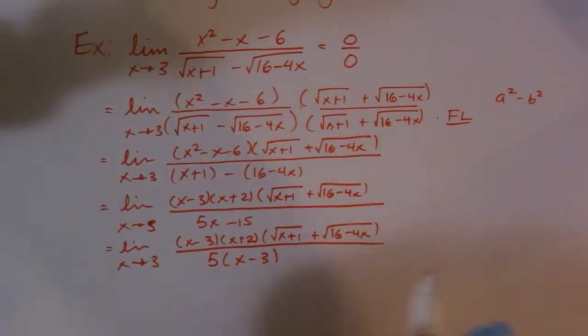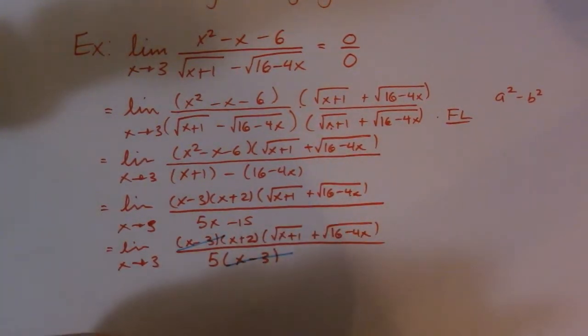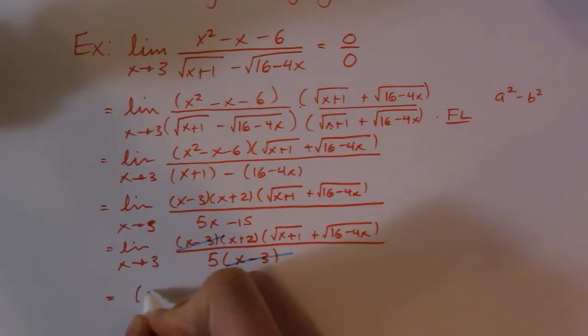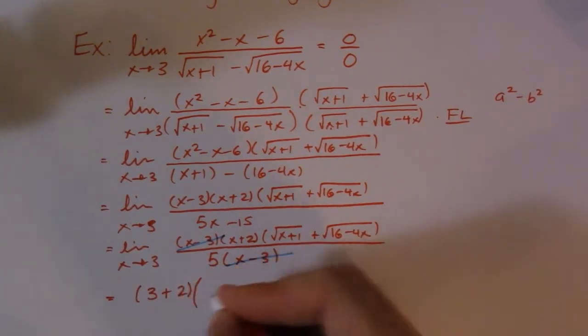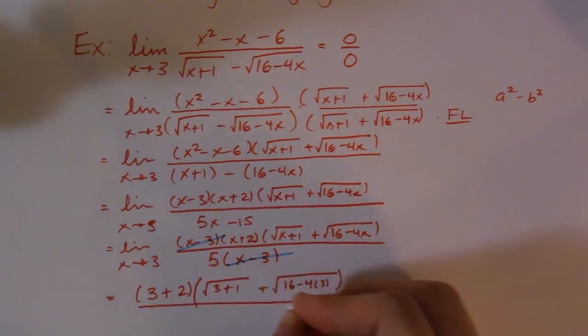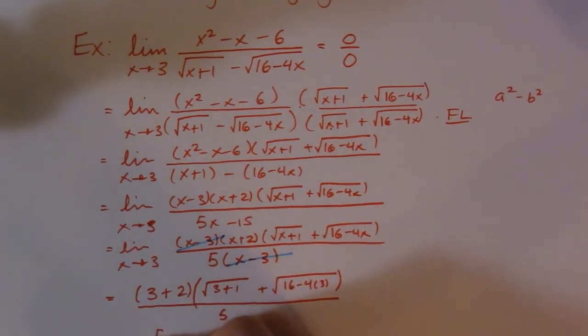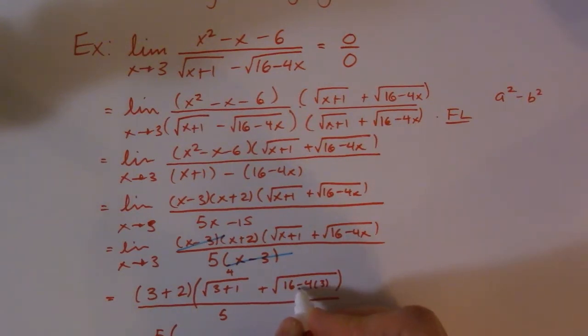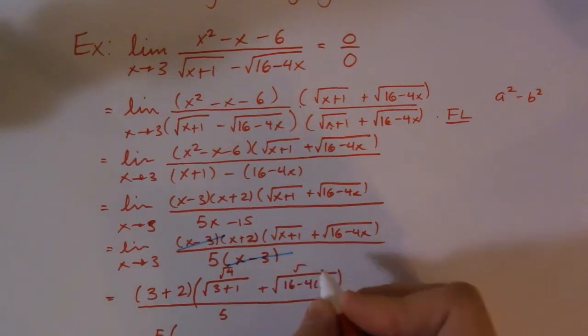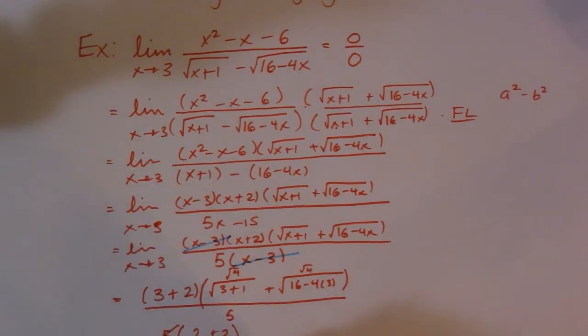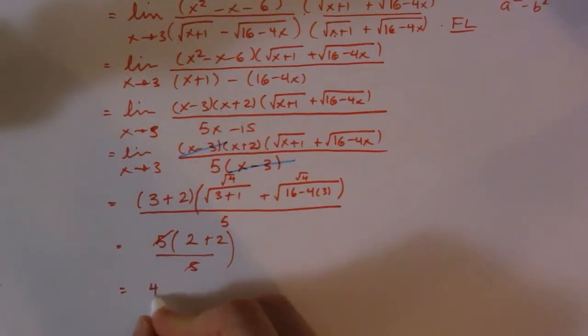So I'll take my blue pen this time, and I'll cancel those two things. Now, I can go ahead, once I do that, I can evaluate my limit. So I'm going to have 3 plus 2, and that's times square root of 3 plus 1 plus square root of 16 minus 4 times 3. So I'll divide it by 5. So this becomes 5 over, and what I have inside here, so this guy is 4, and that's 4 minus 12. So that's square root of 4, I should say, and square root of 4. So that's actually 2 plus 2, all divided by 5. So these 5s can cancel. And I'm simply left with 4. So there's my limit.